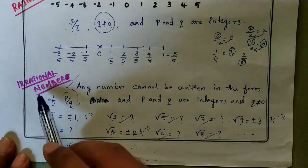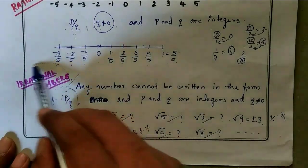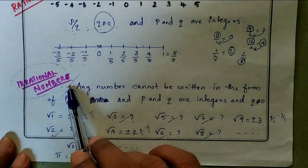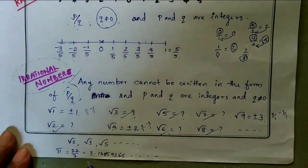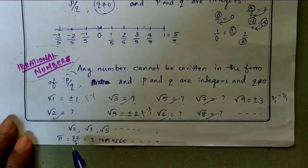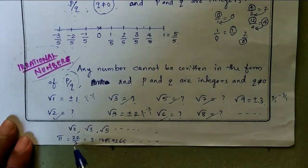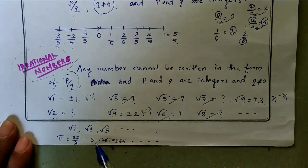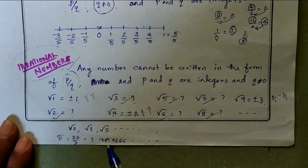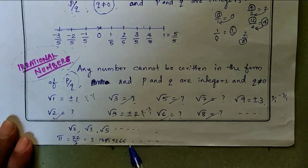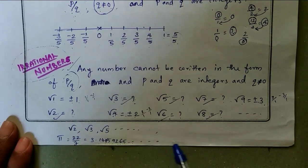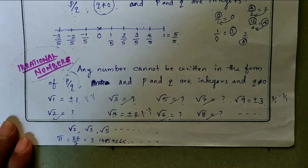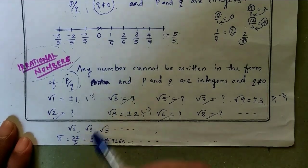These are called irrational numbers. For example, pi equals 3.14159265... You can verify this by dividing 22 by 7, which gives a non-terminating, non-repeating decimal.